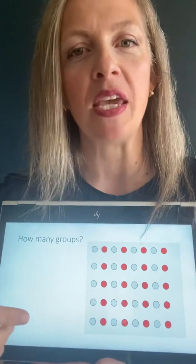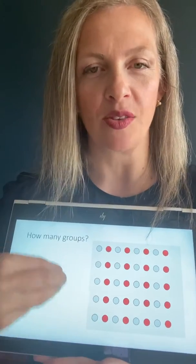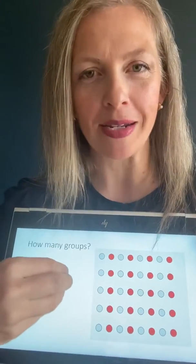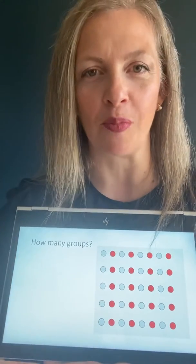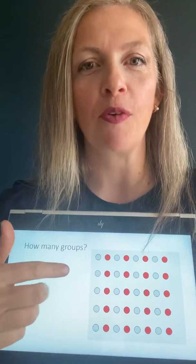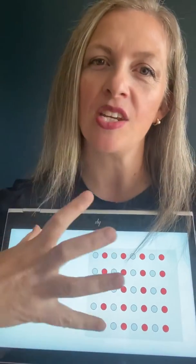But if I color some of these dots red and ask you how many groups there are, chances are you're going to see two groups of dots. You're going to see red dots and gray dots because the color is conveying information. In this case, it's providing a sense of similarity, and that's the Gestalt principle here, the principle of similarity. Our minds tend to group things that are similar together.